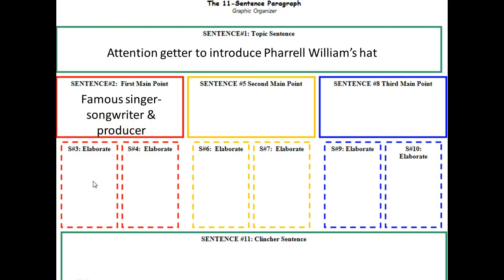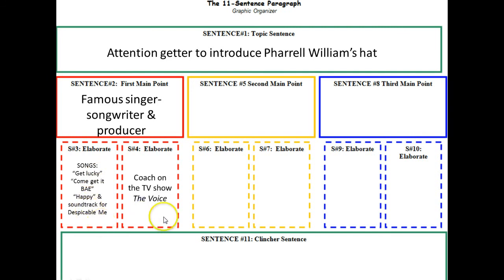I could elaborate in a couple of different ways. You might have more than two pieces of elaboration, and that's great — just squeeze them into the boxes any way you choose. One way I might elaborate: I could name some of his songs — Get Lucky, Come Get It Bae, and Happy from the Despicable Me soundtrack. I also said he's a producer, and that's something he uses to persuade people to join his team on The Voice, so I'll mention that he's on The Voice.